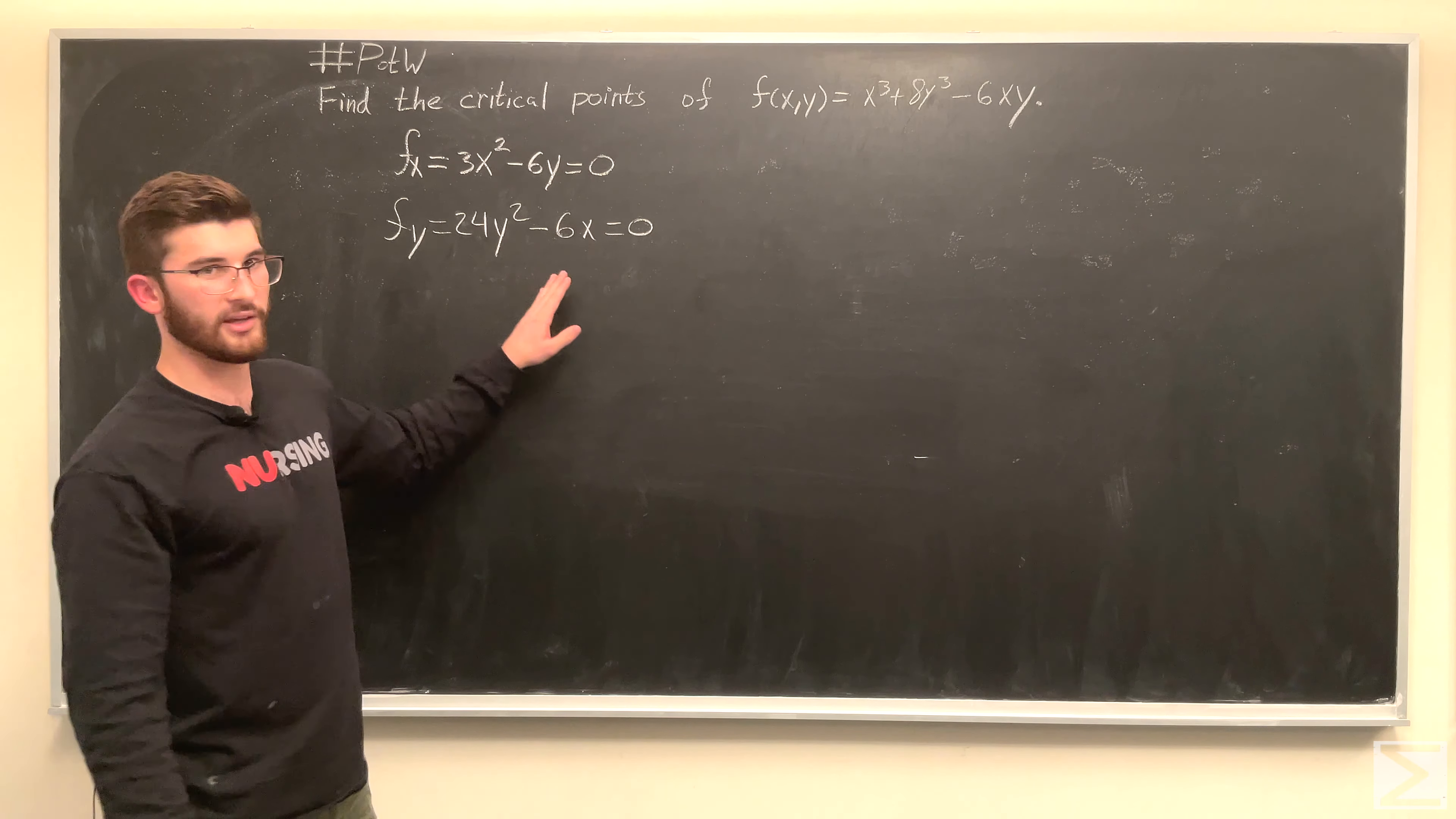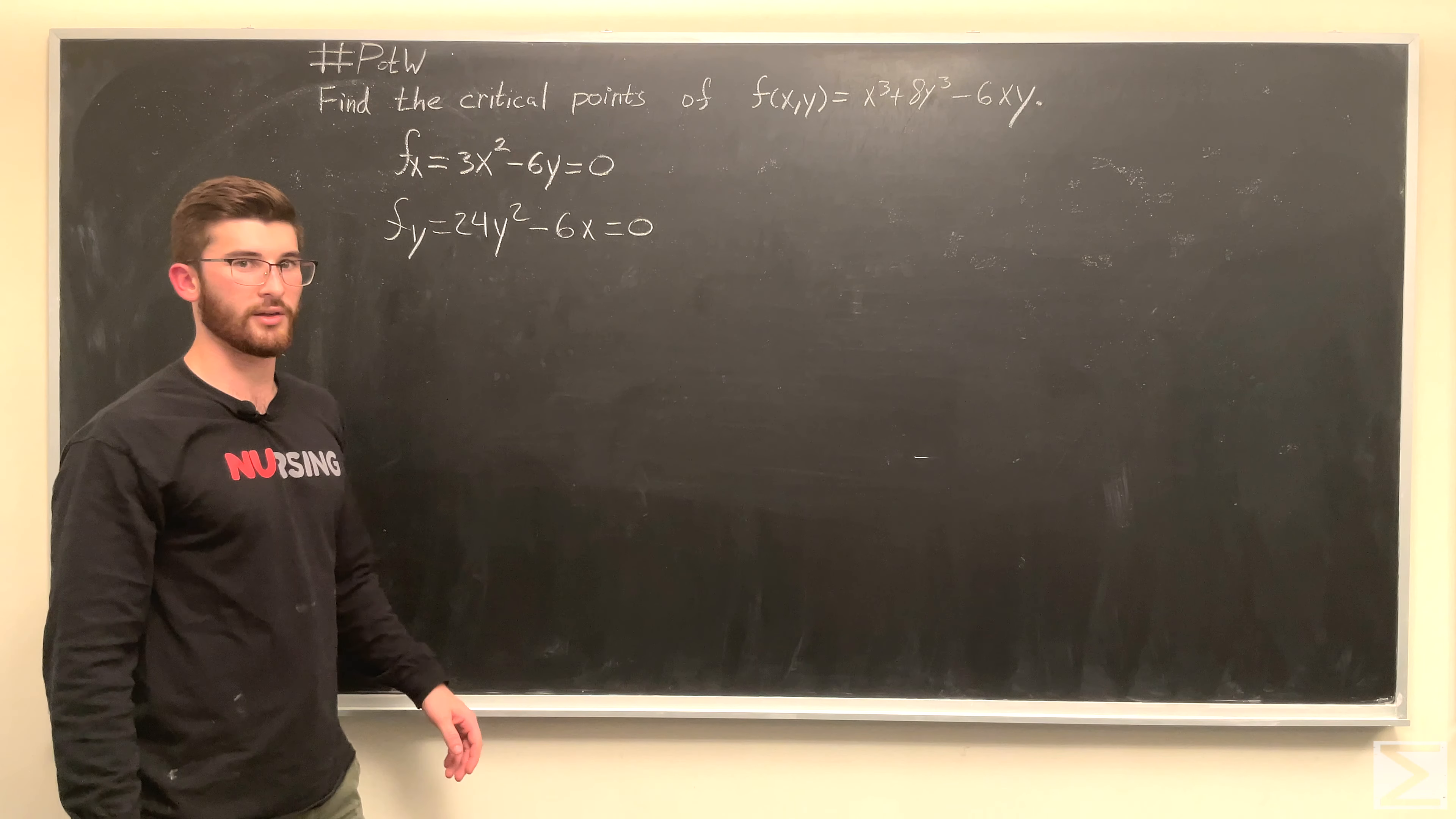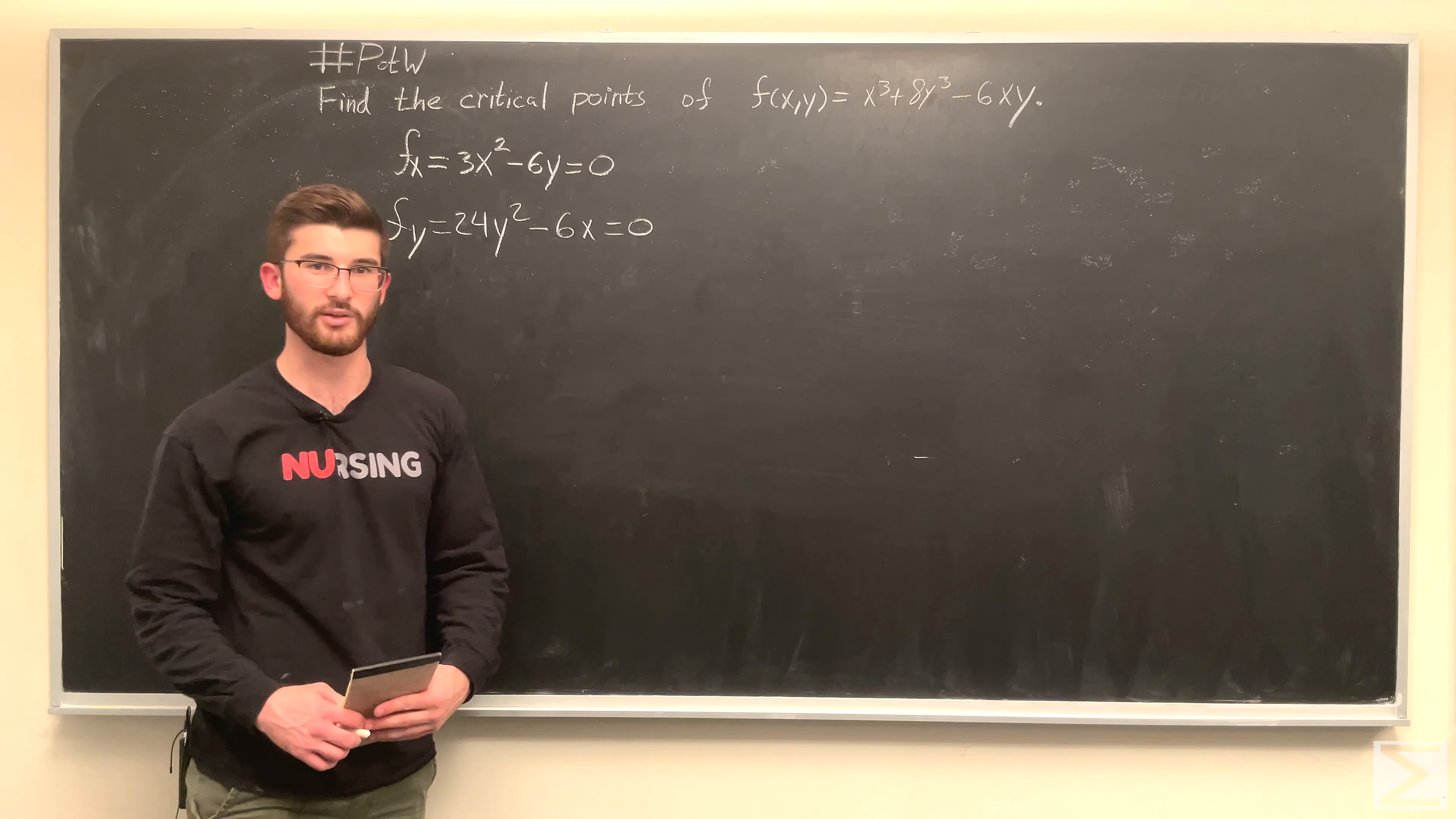So, when we take our partial derivatives, we get that the partial derivative of f with respect to x is equal to 3x squared minus 6y, and we set it equal to 0. With respect to y, 24y squared minus 6x equals 0.